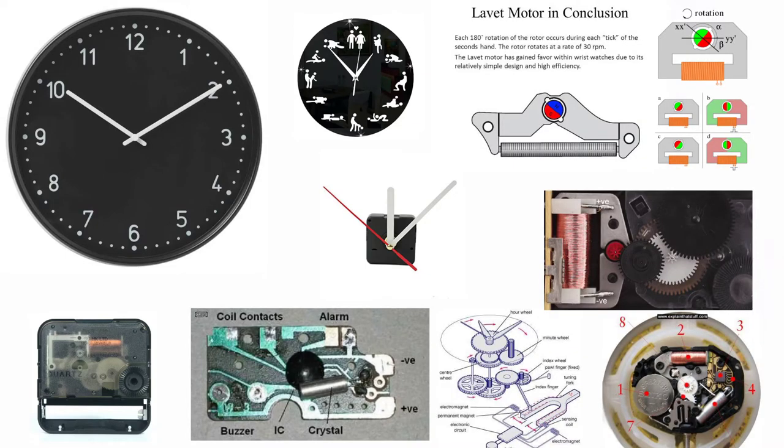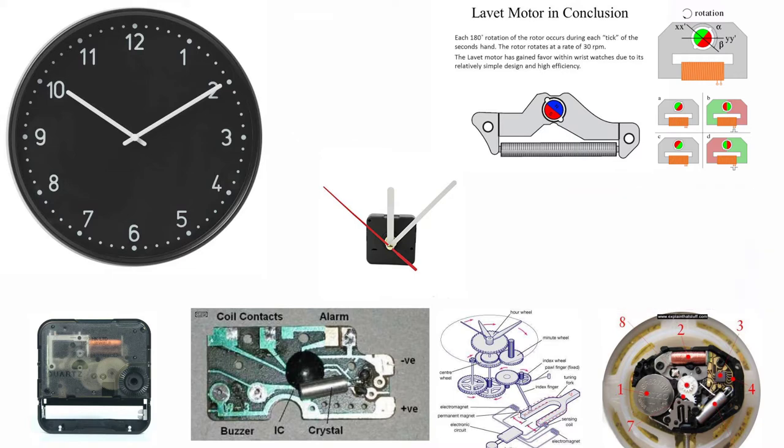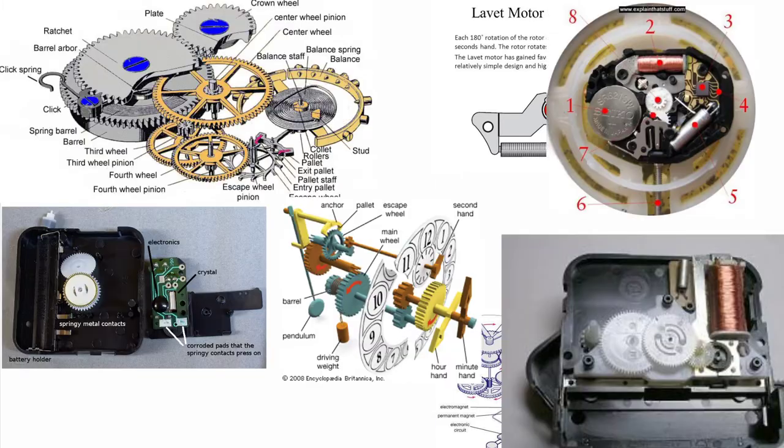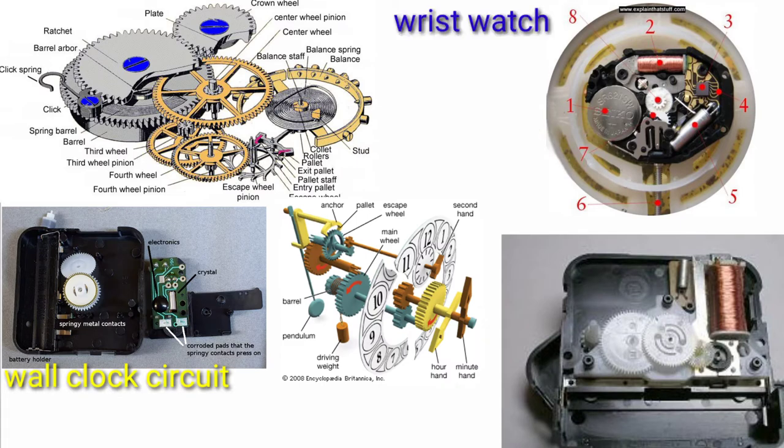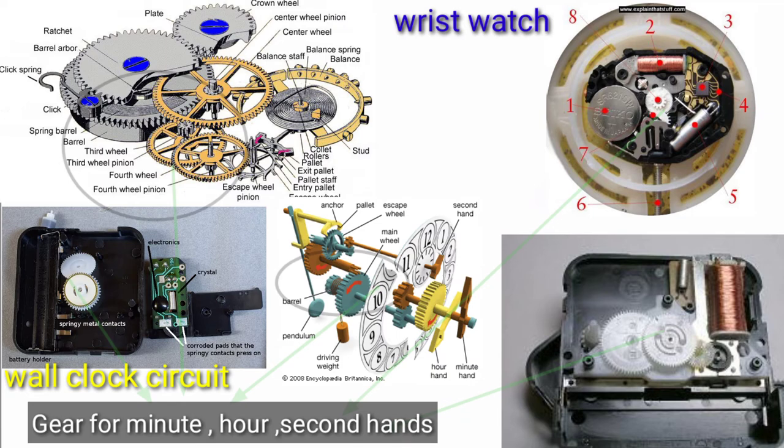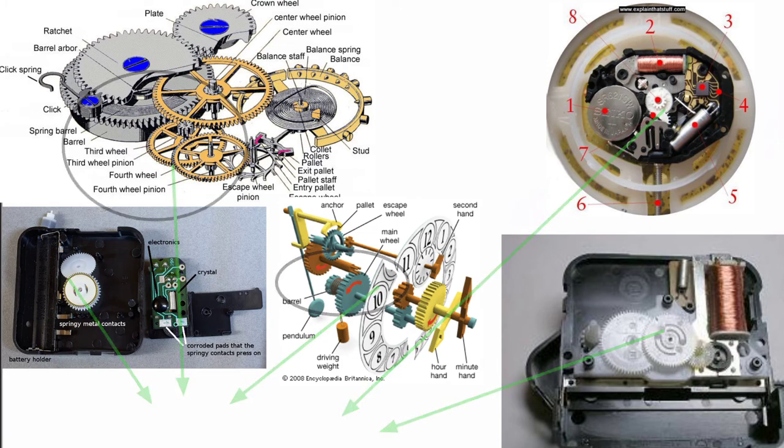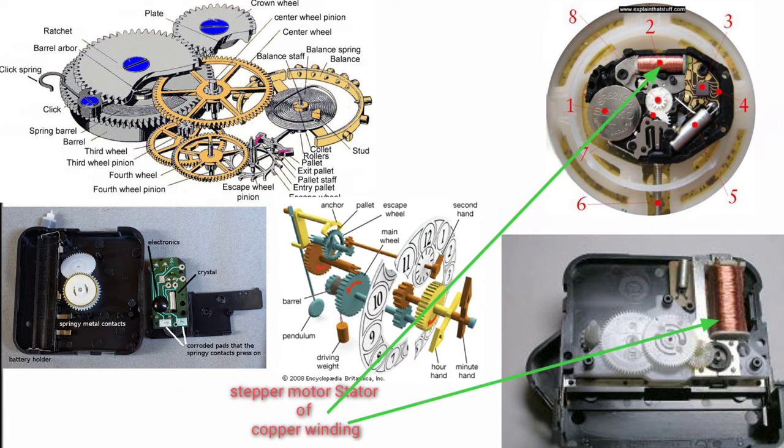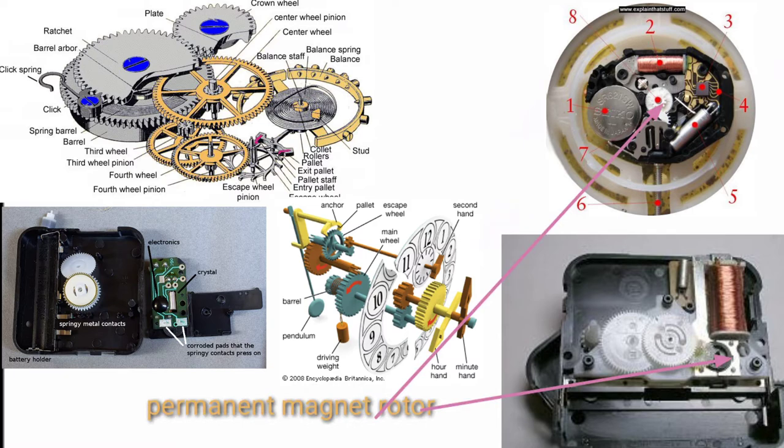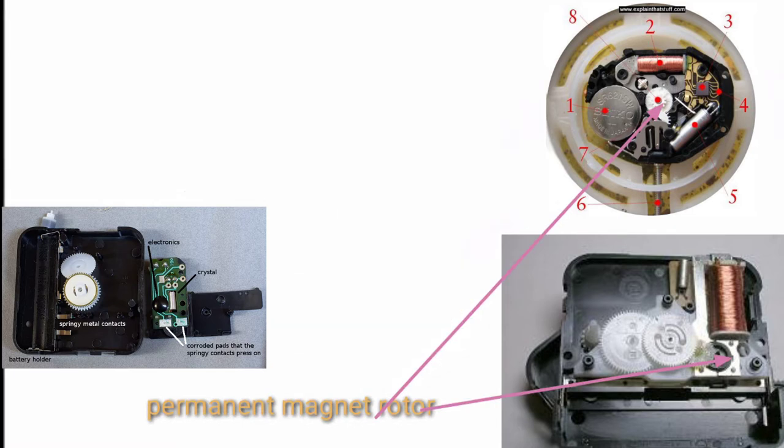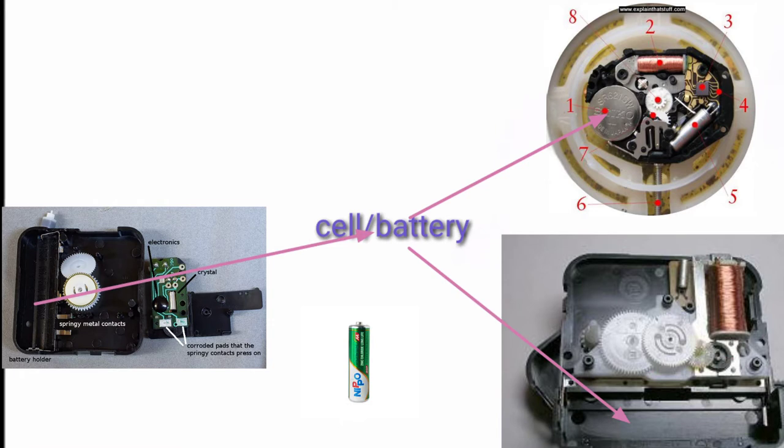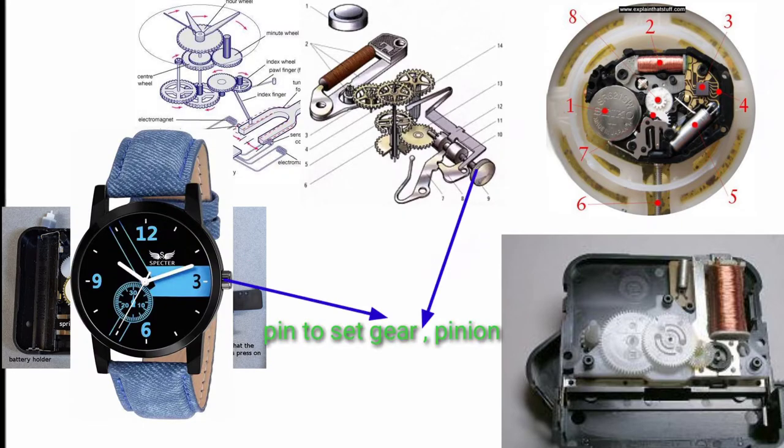We will see quartz wall or wristwatch circuit and motor working. This is the circuit diagram of a quartz watch. These are gears or wheels for rotating the minute arm and second hand. The second gear moves fast. This solenoid coil is the stator of the Lavet stepper motor with field winding, and this wheel is the rotor of the permanent magnet. This is the space of self-supplying DC to the stepper motor. This is the pin for setting the time. Now open the clock.